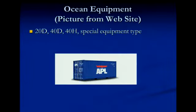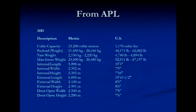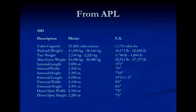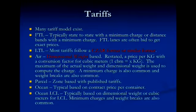For ocean, there are basically three primary types of equipment: the 40D, the 40H, and the 20D. The 20D has an internal width of 7'9", a height of 7'10", and a length of about 20 feet. The payload can be up to 62,000 pounds. Can you ship 62,000 pounds on an ocean container in the United States? No, because the truck won't be able to move. So you're limited both by what the truck can carry and by what the ocean carrier can carry.